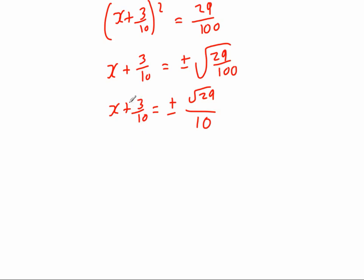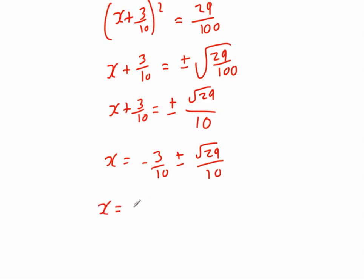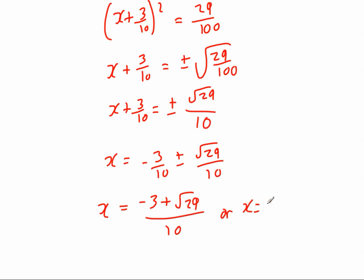We want to get rid of the plus 3 tenths, so we take away 3 tenths: x equals — putting it in front of the plus or minus — minus 3 tenths, plus or minus the square root of 29 over 10. Because they share the same denominator, we can write this as x equals minus 3 plus root 29 over 10, and our other solution is x equals minus 3 minus root 29 over 10.